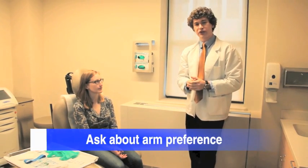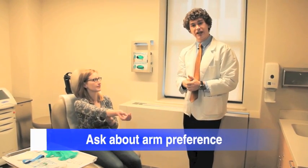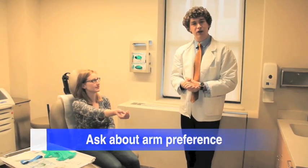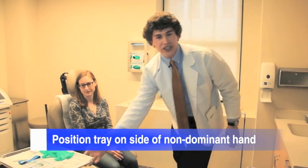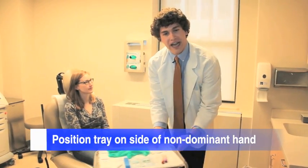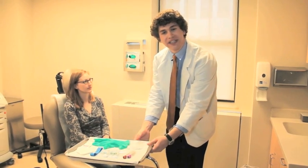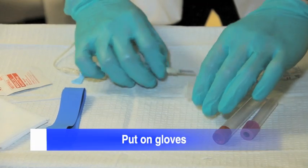Ask the patient whether they have a preference for an arm from which to draw blood and position the standing tray accordingly. The tray should be on the side of your non-dominant hand and all materials should be easy to reach. The medical student drawing blood in this video is right-handed, so he has correctly positioned the tray to his left and all materials are comfortably within reach.